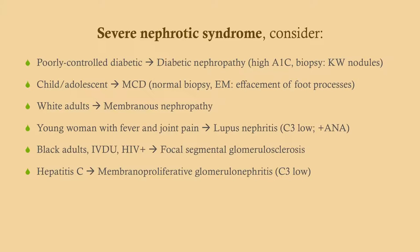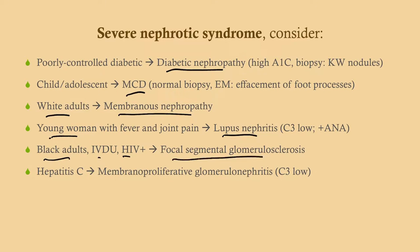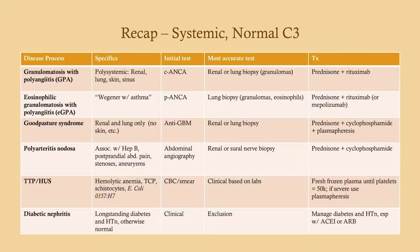Here's a summary differential for severe nephrotic syndrome: if the patient is a poorly controlled diabetic, think diabetic nephropathy; if they're a child, think minimal change disease; if they're a white adult, think membranous nephropathy; if they're a young woman with constitutional signs, think lupus; if they're Black or an IV drug user or HIV positive, think FSGS; and if they have hepatitis C, think membranoproliferative glomerulonephritis. This is a recap of everything covered in both videos.